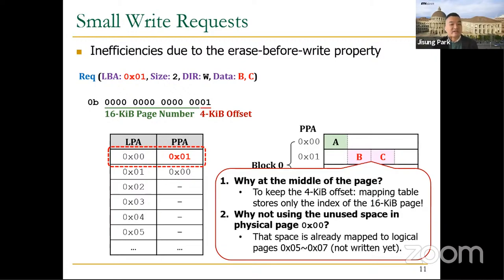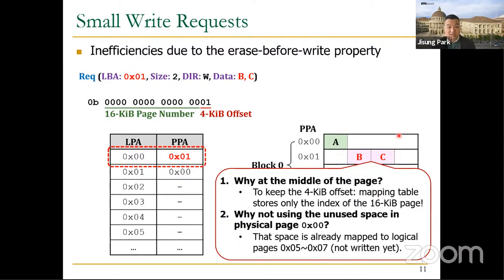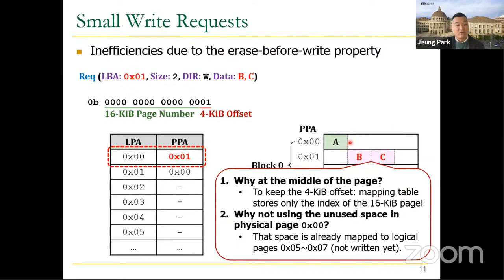Even though there is free space in physical page 0, the FTL should not use that space, because that free space is already mapped to other logical blocks — logical blocks 5 to 7 — which have not yet been written. Let's consider one more request that writes a 4 kilobyte data block D to logical block address 5, which would be translated to logical page address 1. Now the FTL has already allocated physical page 0 to logical page 1, and the space for offset 3 is unused. Can you use the unused space for data D?